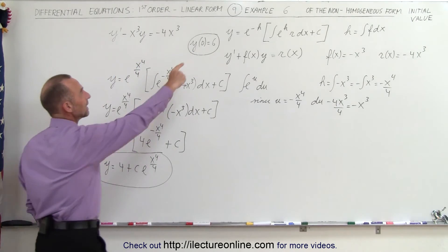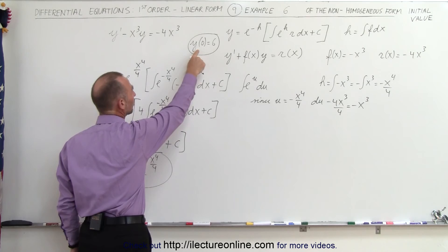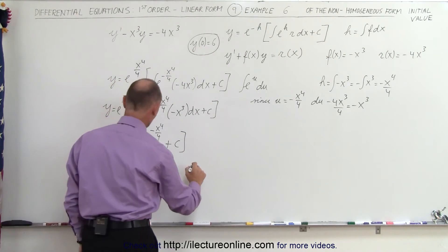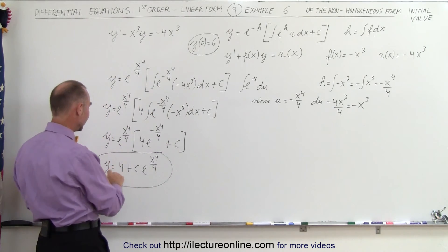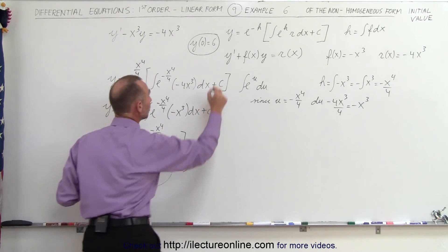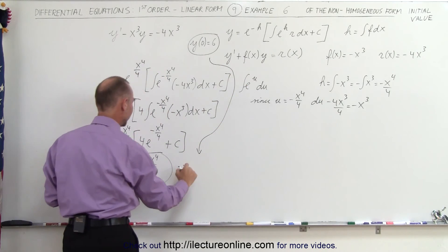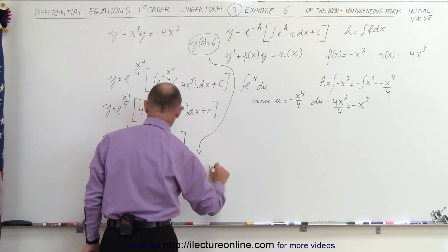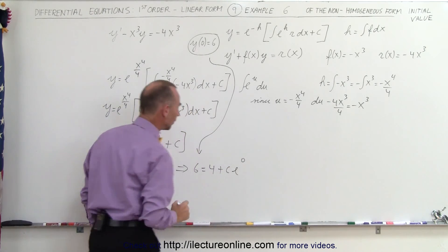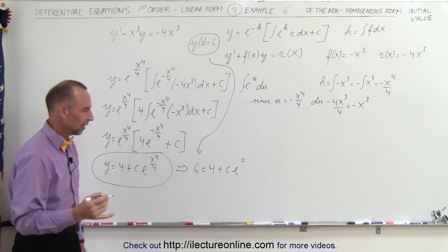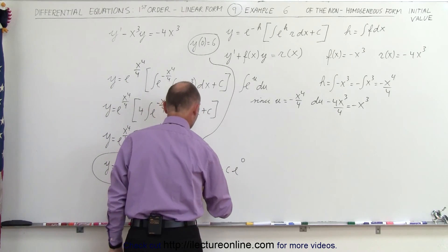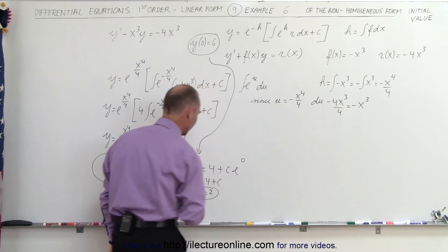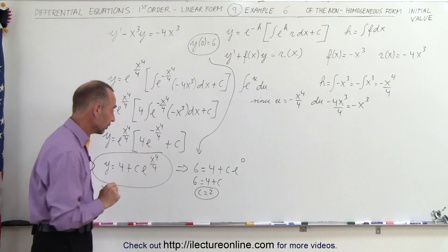Now we still have to apply the initial condition: when x is equal to 0, y is equal to 6. Plugging that in, we get 6 equals 4 plus C times e to the 0 power. Since e to the 0 equals 1, we get 6 equals 4 plus C, so C equals 6 minus 4, which is 2. That allows us to find the value for the constant of integration.